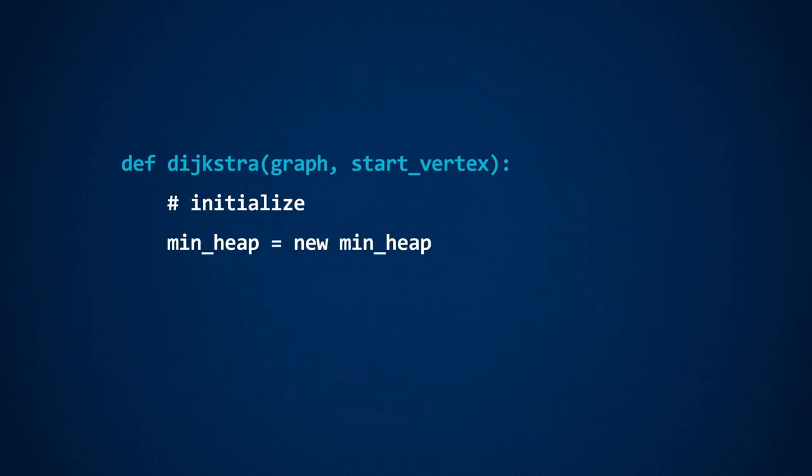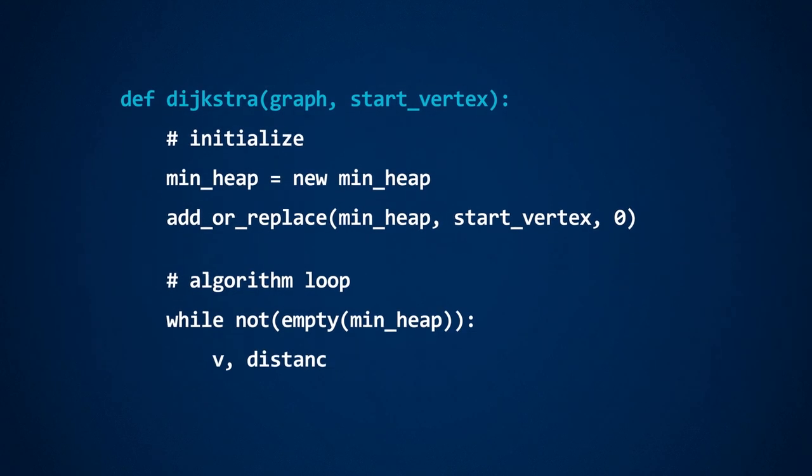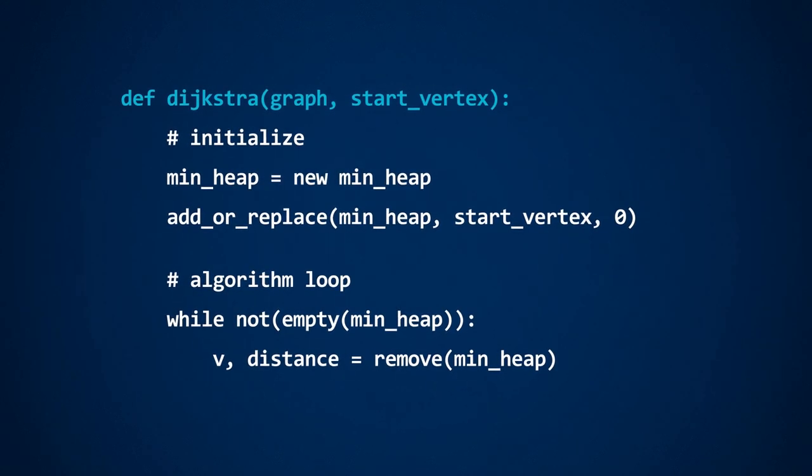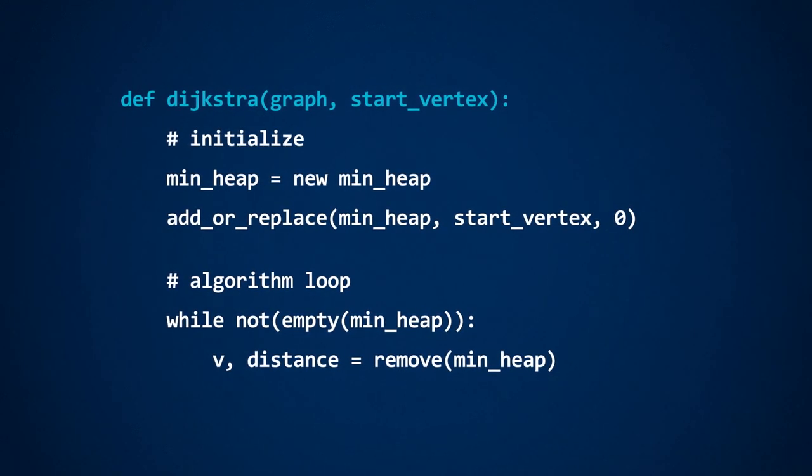We can simply initialize an empty min heap and add the starting vertex with a value of 0. Next, we'll perform a loop while the min heap is not empty. We remove a key value couple from the min heap, which will return a vertex and its distance.